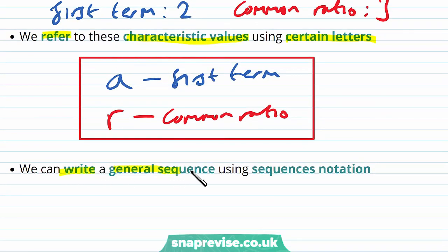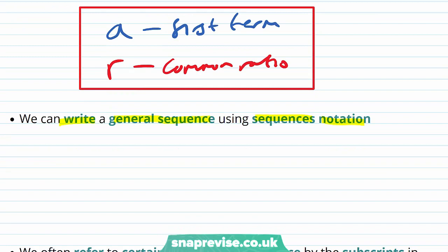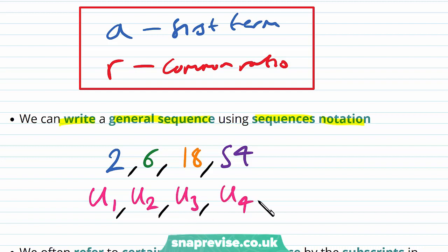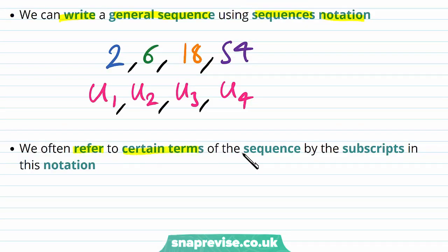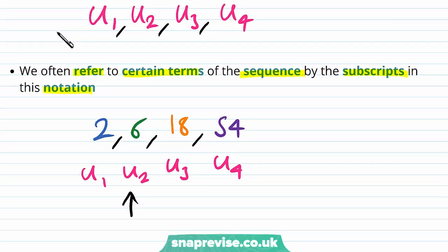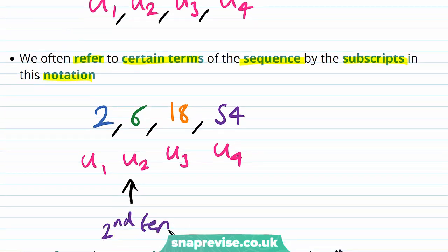We can write a general sequence using sequence notation. Let's say we have the same sequence 2, 6, 18, 54. The first term we can write as u₁, the second term as u₂, the third term as u₃, and the fourth term as u₄. We often refer to certain terms by the subscripts in this notation. So given this sequence, we refer to u₂ — in this case 6 — as the second term, and correspondingly u₄ as the fourth term in the sequence.